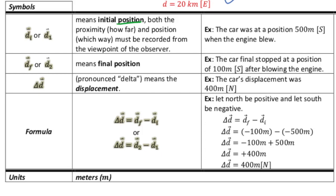And DF and D2, or D2 I should say, that refers to the final position. So you both have a magnitude and a direction for those positions. So example, the initial position, the car was at a position that was 500 meters south when the engine blew. Then the car had a finally stopped at a position that was 100 meters south after blowing the engine.